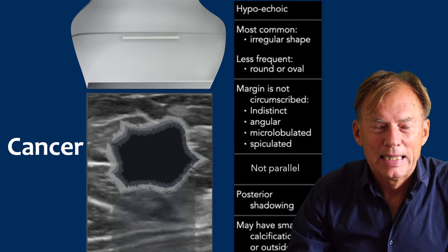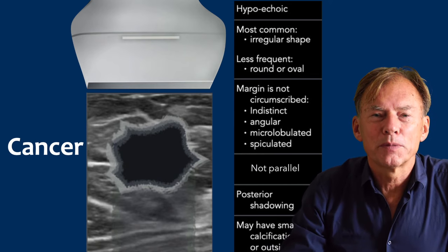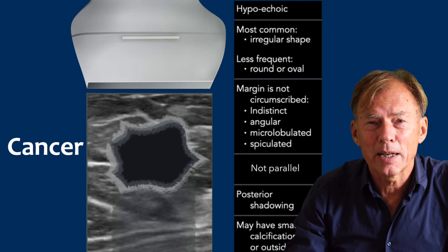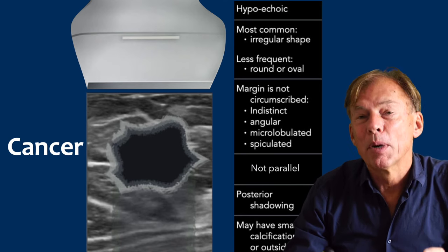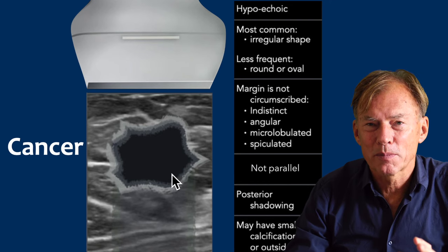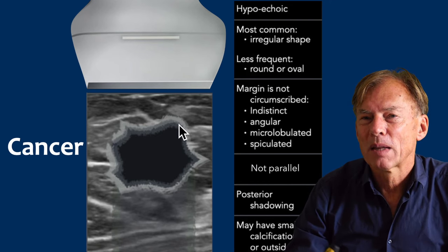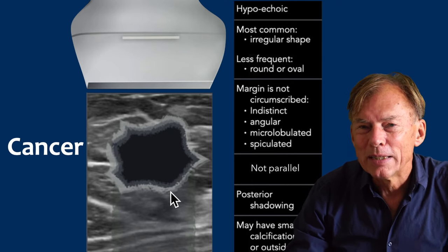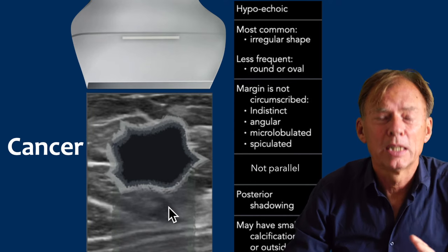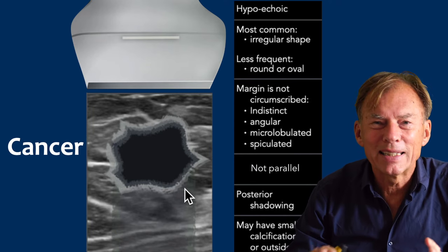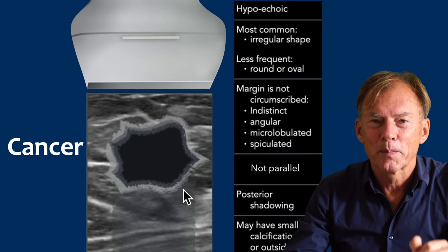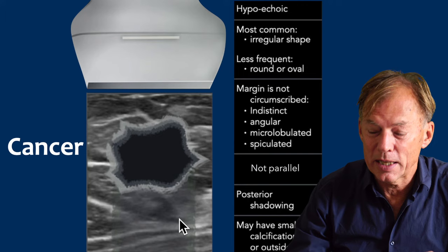Breast cancer is the most common malignant tumor in women. A woman's risk increases with age — most women diagnosed are over 50, but younger women can also get breast cancer. The key features on ultrasound are a hypoechoic mass with mostly irregular shape, though sometimes round or oval. When oval, the orientation is not parallel to the skin but usually more vertically oriented. The border is not sharp but uncircumscribed — it may be indistinct, angular, microlobulated, or spiculated, and sometimes with a hyperechoic halo. A carcinoma may also have posterior shadowing and small calcifications.